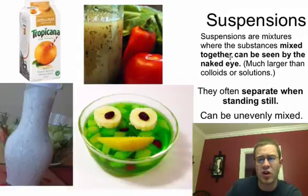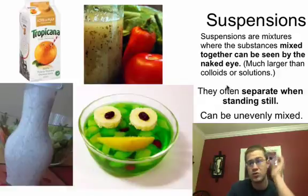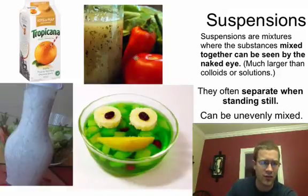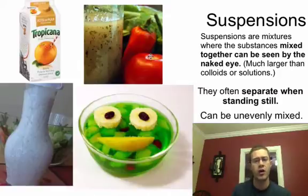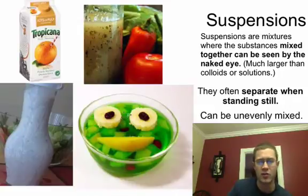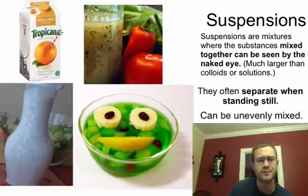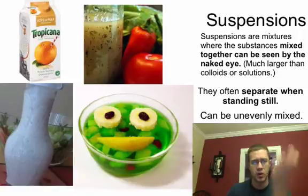Then there are suspensions — these are the largest pieces where you can see them with the naked eye without a microscope. They are much larger than colloids or solutions, and oftentimes they'll separate when standing still. We call these heterogeneous mixtures, meaning the parts are easily separated and visible. Examples are Italian dressing, fruit salad, gelatin, ranch dressing, and party mix. They can also be unevenly mixed — another example is Tropicana orange juice with lots of pulp that you have to shake up, otherwise it all settles to the bottom.